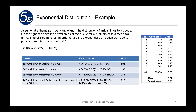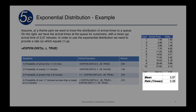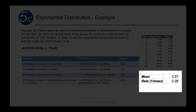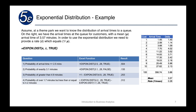Using that dataset with 100 observations, our mean is 3.57 and our rate is 1 divided by 3.57, which is 0.28. The probability of an arrival time less than or equal to 2.5 minutes is EXPON.DIST(2.5, 0.28, TRUE), giving a result of 0.504.